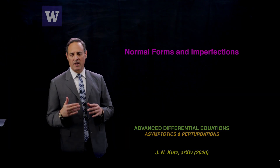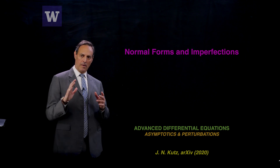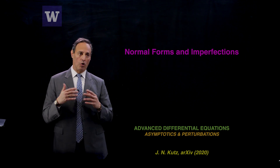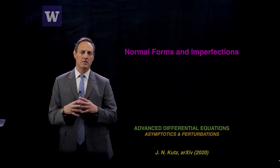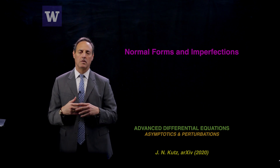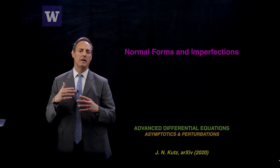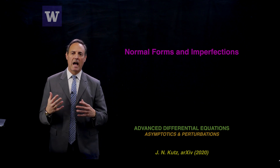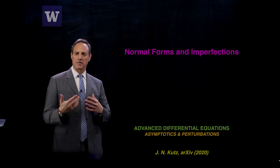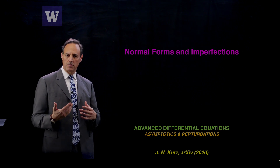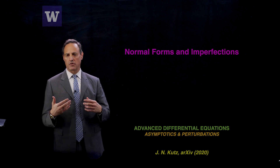I'm going to continue talking about bifurcation theory. In particular, I want to talk about this concept of what are called normal forms, imperfections, and what this means for us in thinking about real systems where we have changes in behavior, changes in dynamics as a function of parameters, and how we can characterize those. That's what bifurcation theory is going to do.